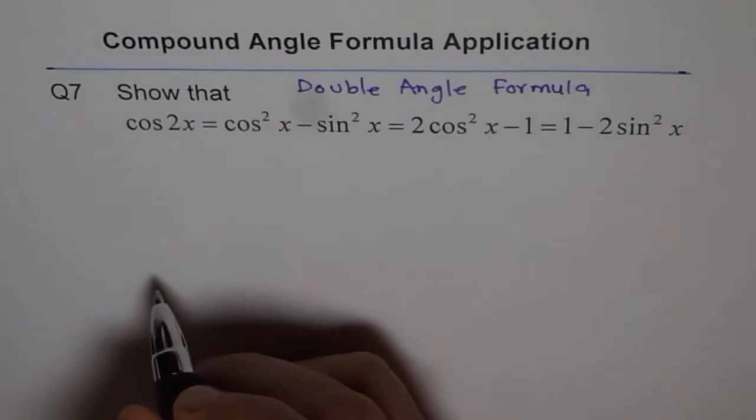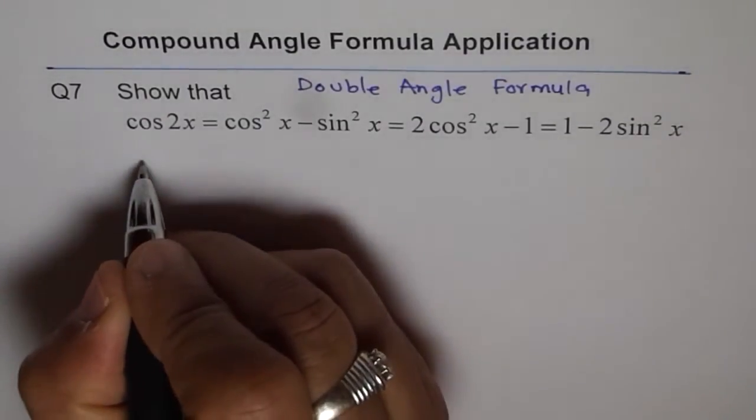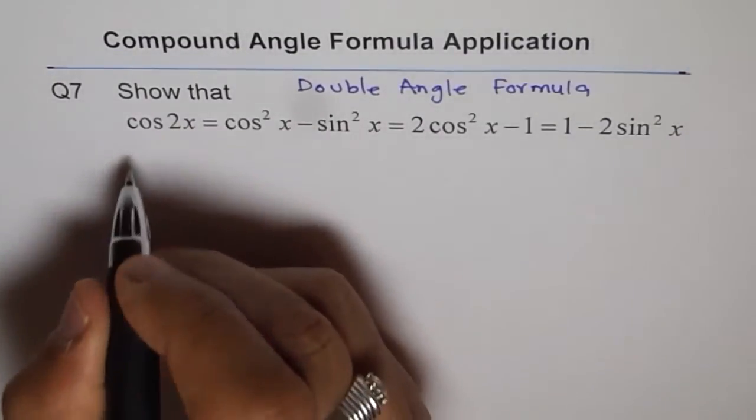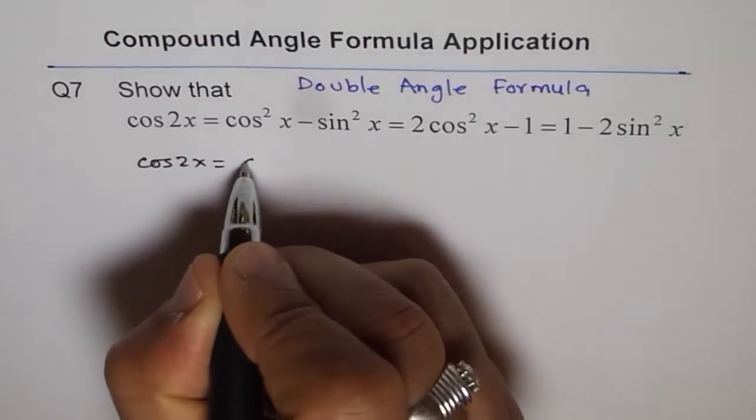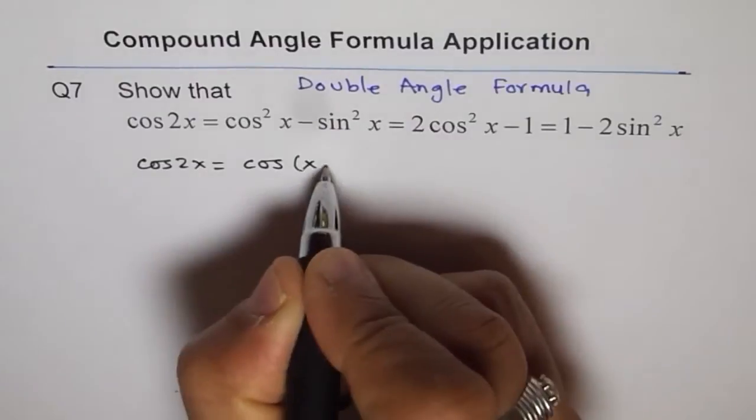Let's try to prove it. It is simple proof starting with compound angle formula. We can write cos of 2x as equal to cos of x plus x.